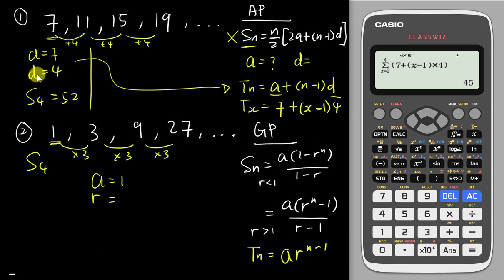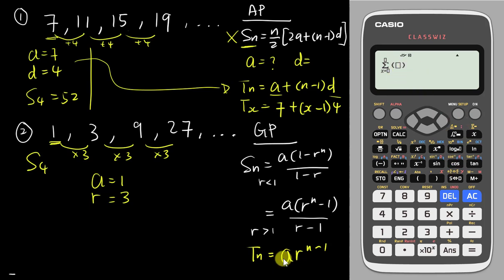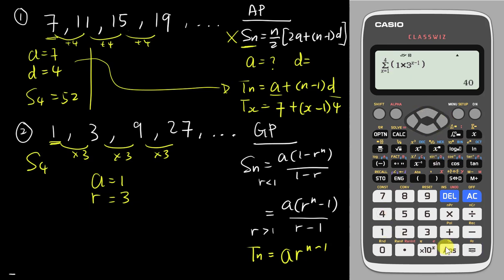You can still use the standard formula in the exam, but here I'll show the calculator skill. First find your 'a' value — the first term is 1. For GP we use 'r' for common ratio instead of 'd'; here r is 3 because each term is multiplied by 3. Now press Shift x for sigma and key in the nth term formula: 1 times 3 to the power (x minus 1). Set the range from 1 to 4 and press equals. The calculator gives 40, so S4 equals 40.